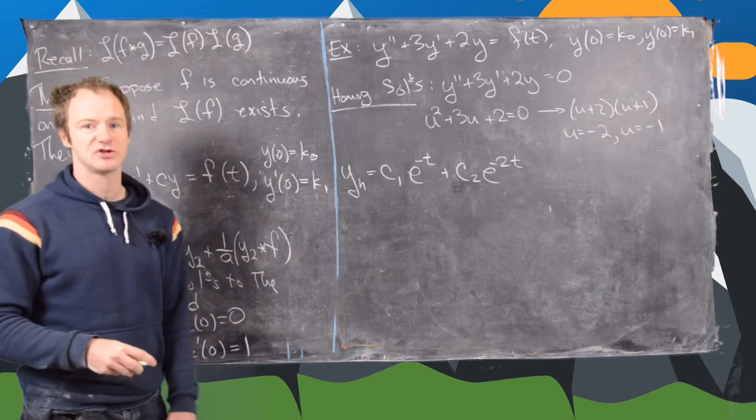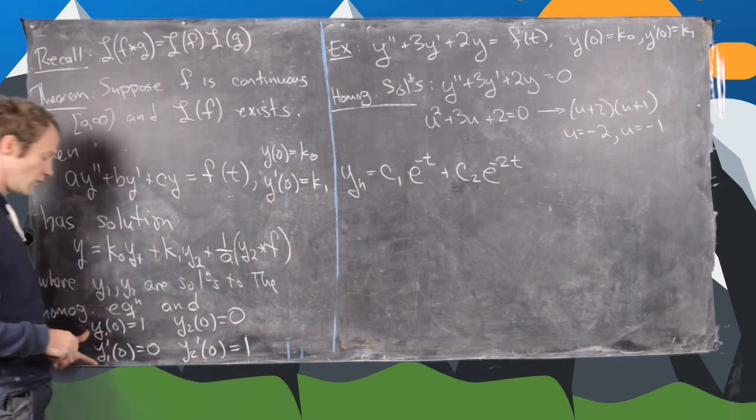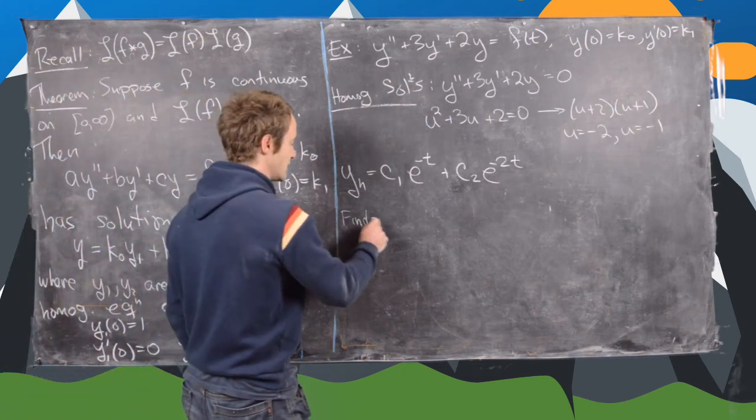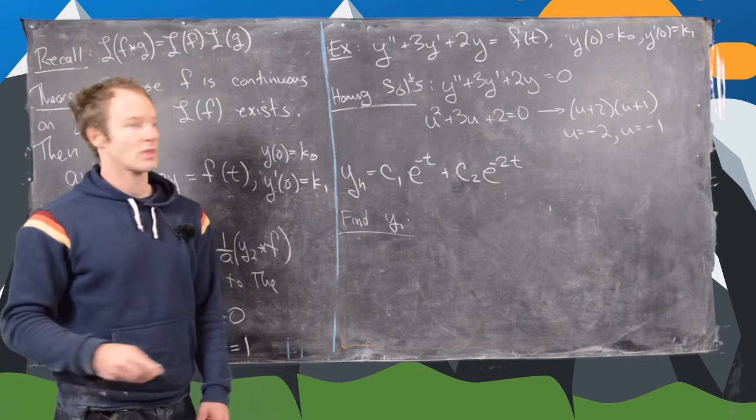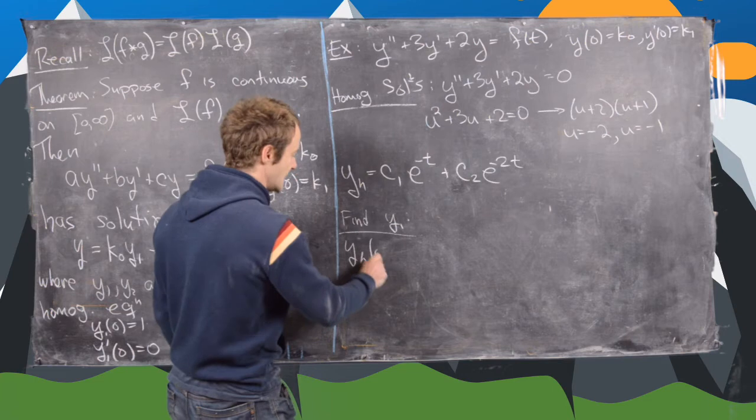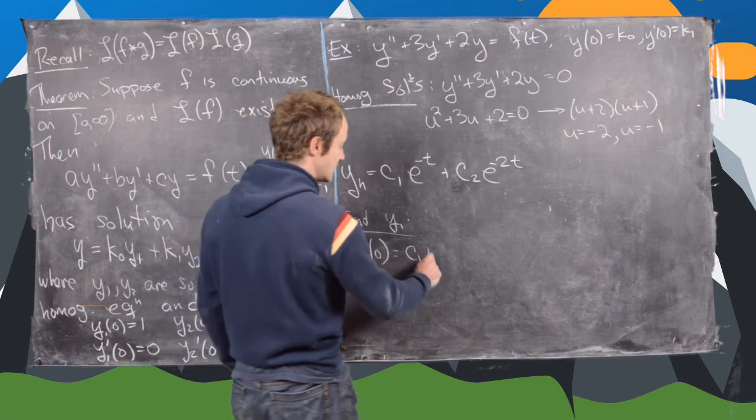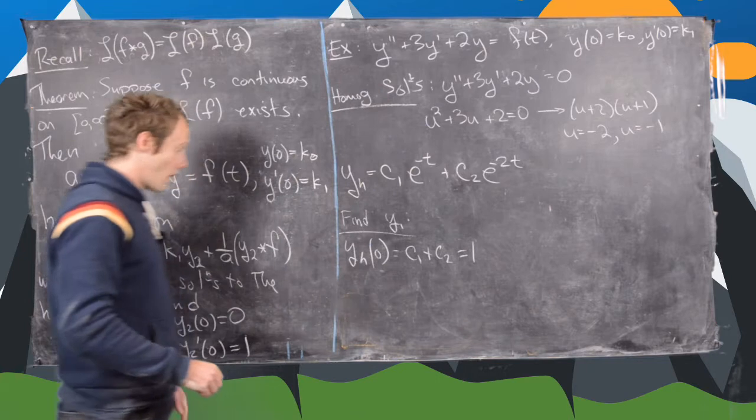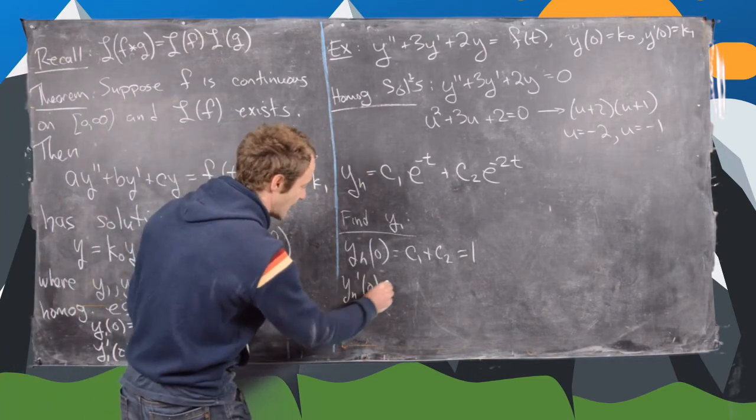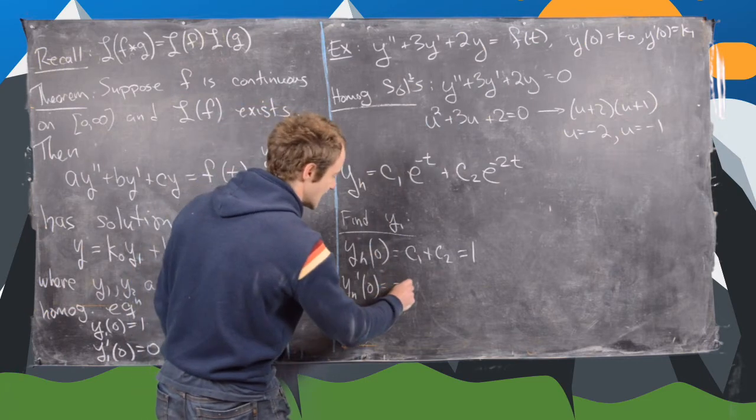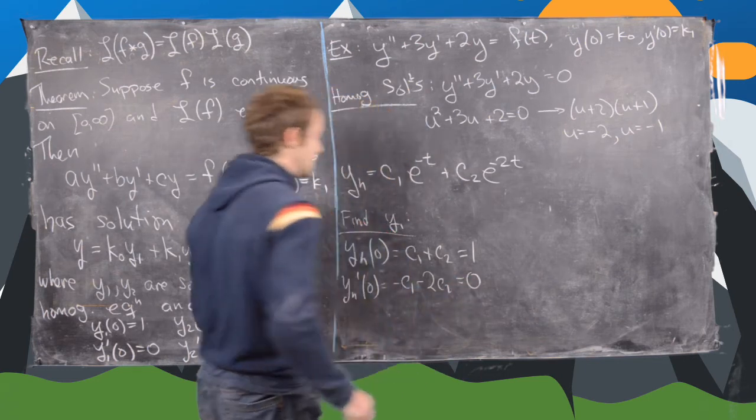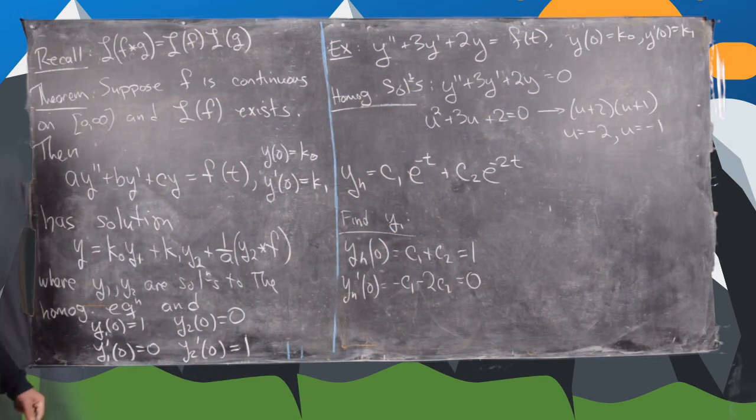But now we can't just use this homogeneous solution. We need to mold it so that it satisfies these rules. So let's do that. In other words, we want to find y1. So we'll do that by plugging in 0 into this. So we have yh evaluated at 0, so that's c1 plus c2, and we want that to be 1 for y1. And then we have yh prime evaluated at 0, that's going to be minus c1 minus 2c2, and that needs to be equal to 0 for this condition to hold on y1.